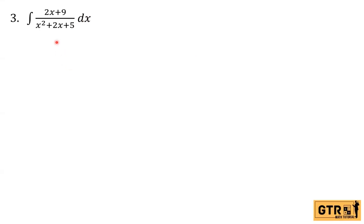So the first step in solving this is to try the formula — the integral of du over u — because the denominator is x² + 2x + 5 and the numerator is 2x + 9. The derivative of the denominator x² + 2x + 5 is equal to 2x + 2. So we can see in the numerator we have 2x + 9, and we can break this into (2x + 2) + 7 so that we can apply the integral of du over u.